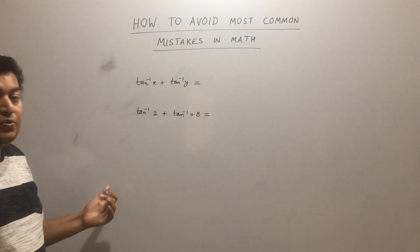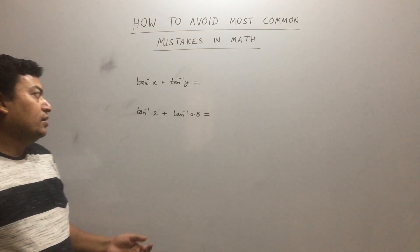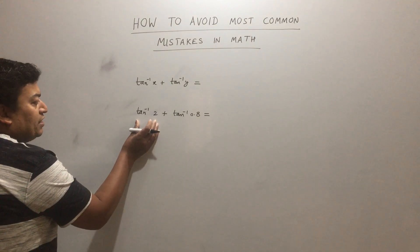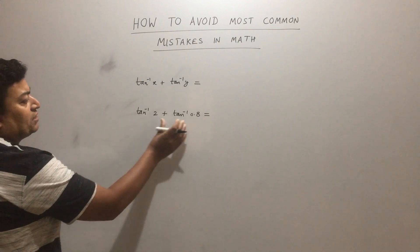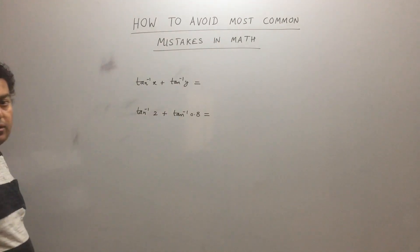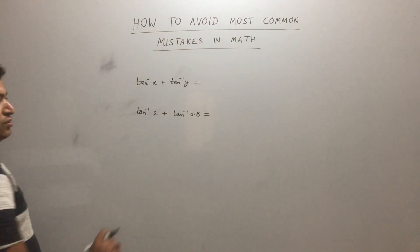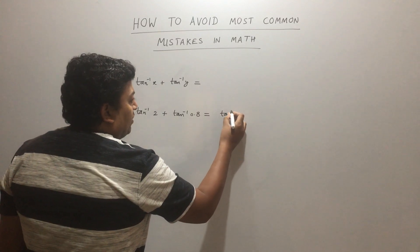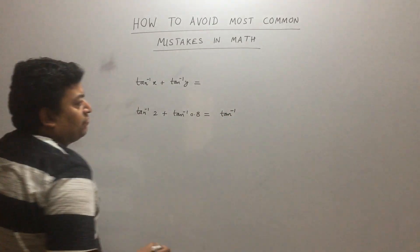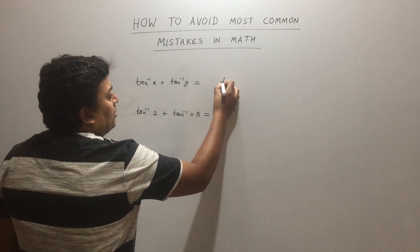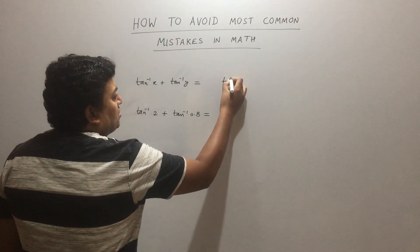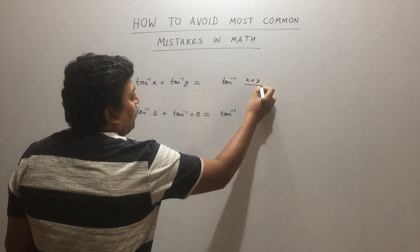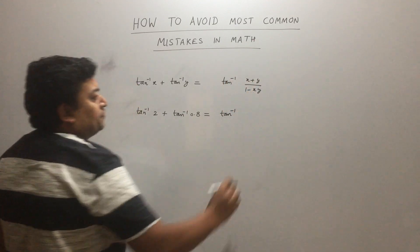Suppose I have to find tan⁻¹(2) + tan⁻¹(0.8). Usually I have seen people doing this: they use the formula tan⁻¹(x) + tan⁻¹(y) = tan⁻¹((x + y) / (1 - xy)).